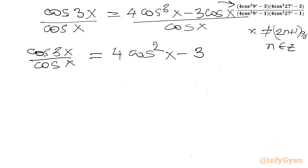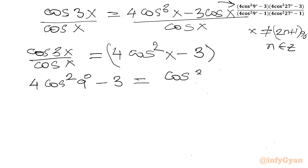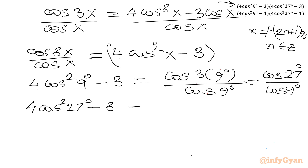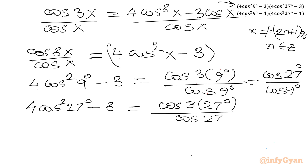Looking at the numerator, we have the form 4cos²9° − 3, which equals cos(3×9°) / cos9° = cos27° / cos9°. Similarly, the second bracket 4cos²27° − 3 equals cos(3×27°) / cos27° = cos81° / cos27°.